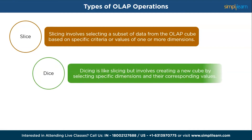Next, dicing is similar to slicing but involves creating a new cube by selecting specific dimensions and their corresponding values, allowing users to examine data across multiple dimensions simultaneously. For example, you can dice the data to analyze sales for a specific city like New York and a specific product category like electronics, showing how well your electronic products perform in that city.